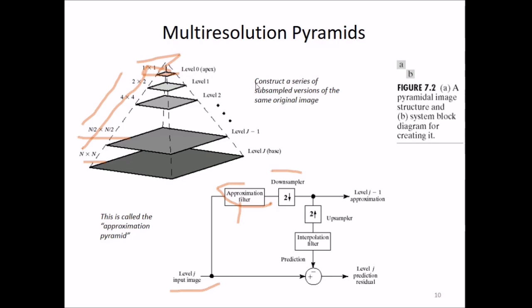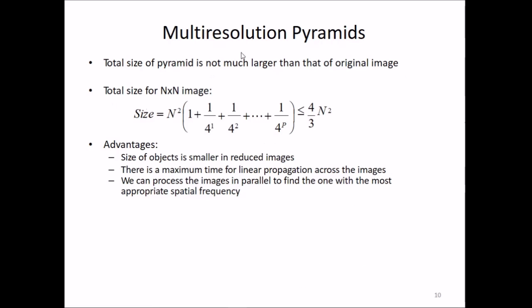This is how down sampling is done. Once this is done, we have a level J approximation, but we can also up-sample it, use an interpolation filter, and find the difference between the input image and predicted image—we can find the residual. This is a pyramidal image structure. The total size of the pyramid is not much larger than the original image. If we assume an n by n image, we divide it to n/2 by n/2, then n/4 by n/4, and so on.